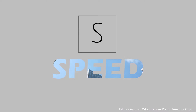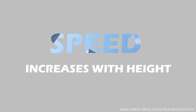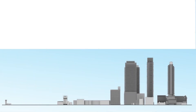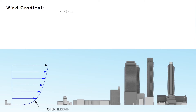Within the urban environment, wind speed will change depending on height and proximity to structures. Wind speed increases with height as the wind becomes less obstructed by the earth's surface roughness, including trees and urban structures. Global wind speed increases with height at an exponential rate. The rate of change in wind speed depends on terrain and is therefore different for open country found near most airports in comparison to city or urban terrain.